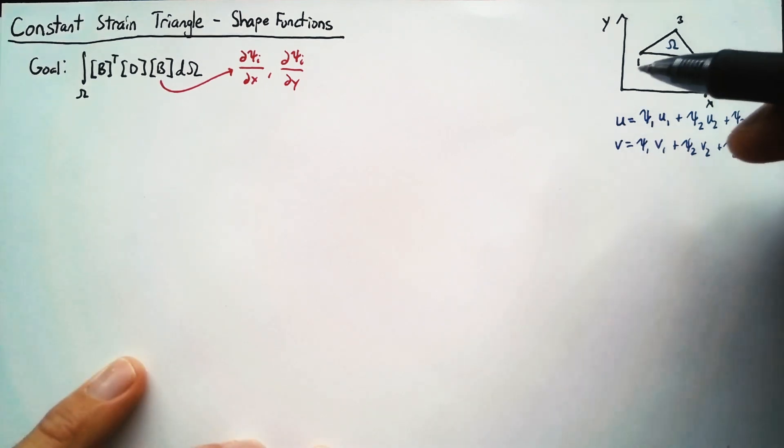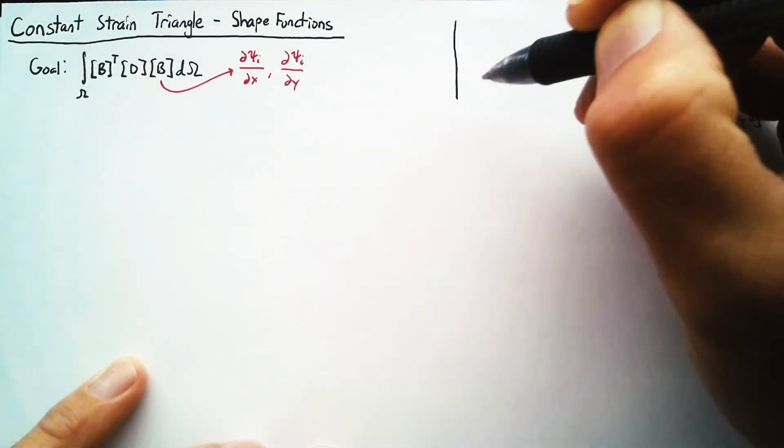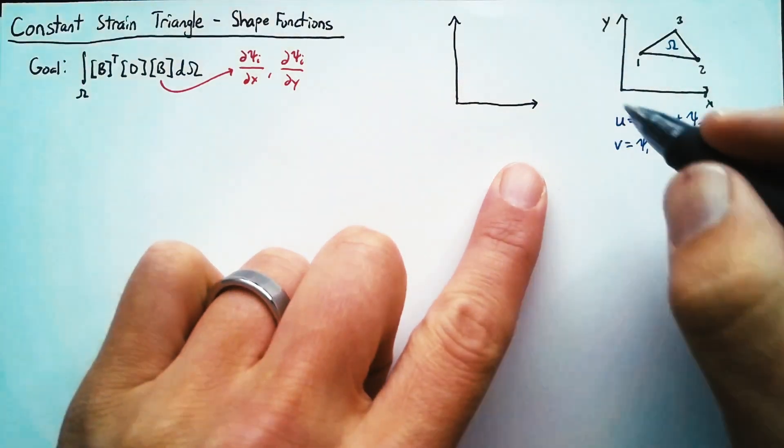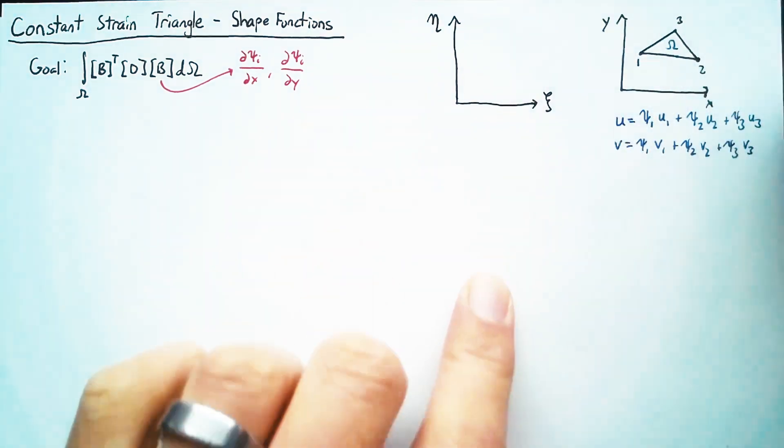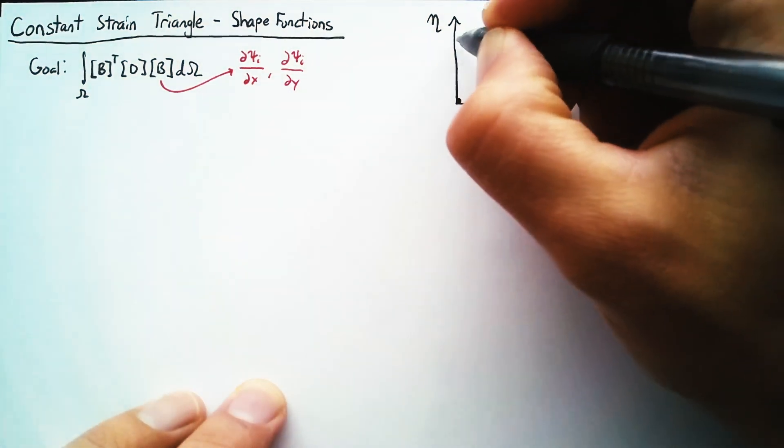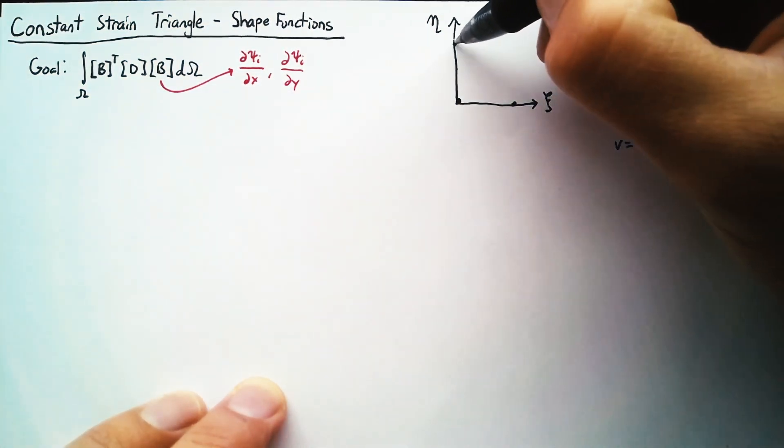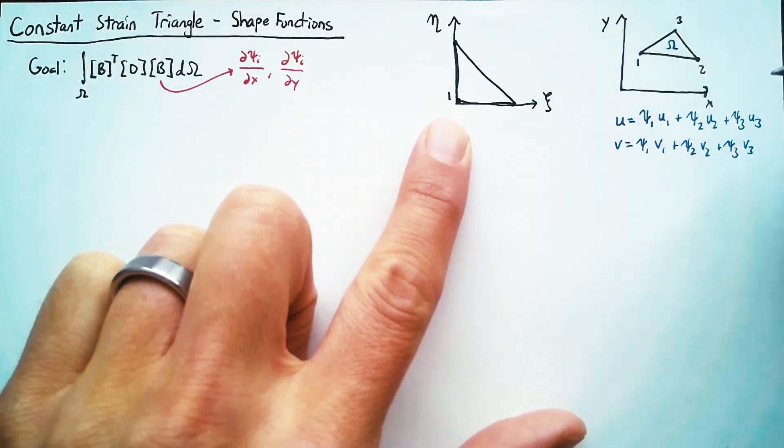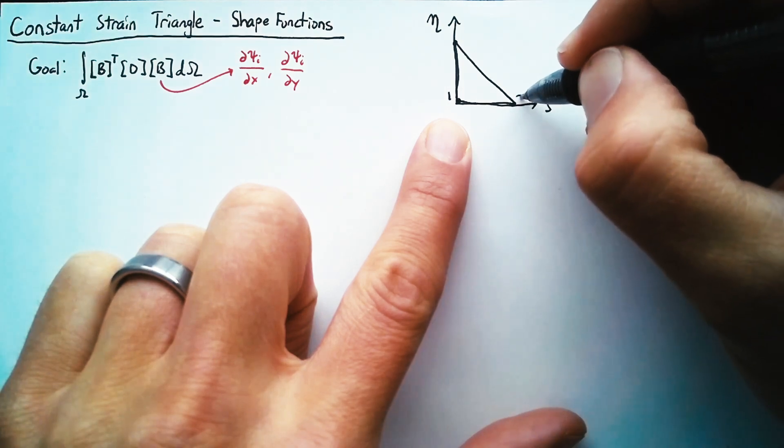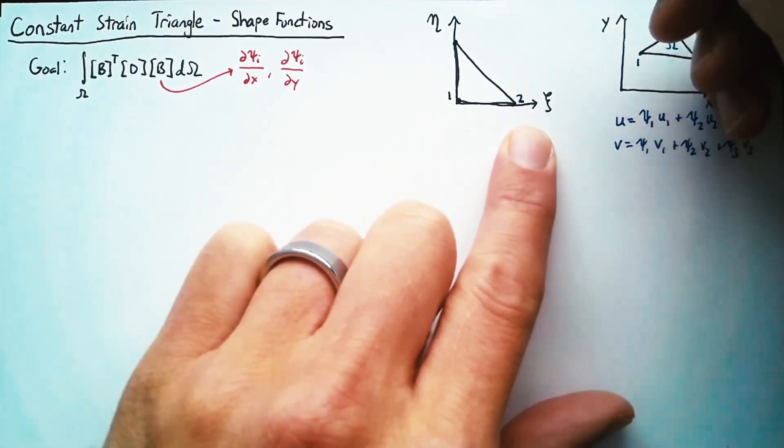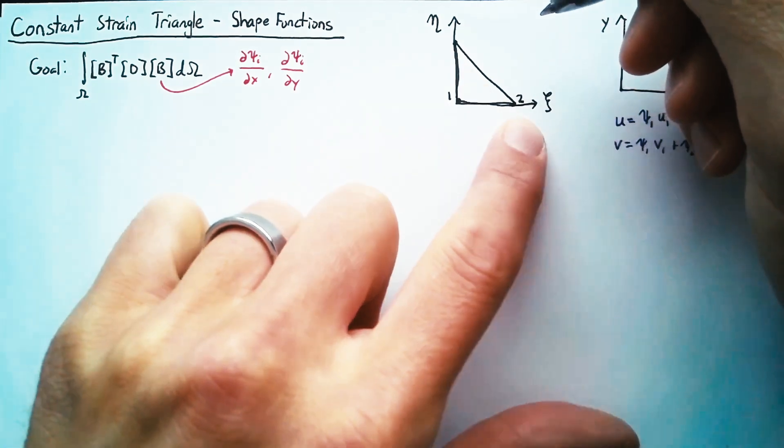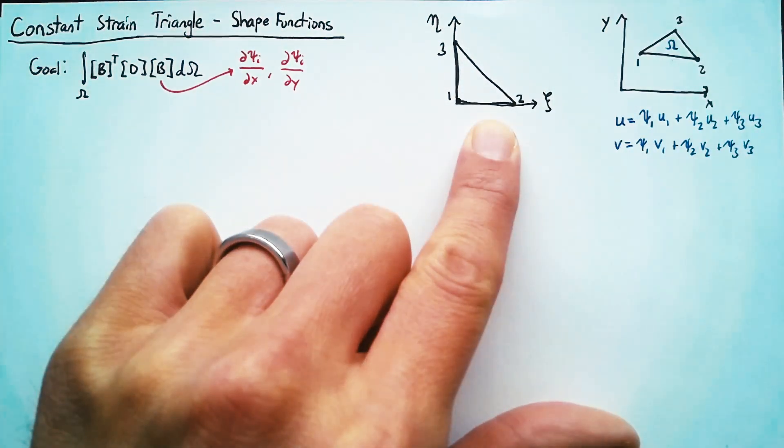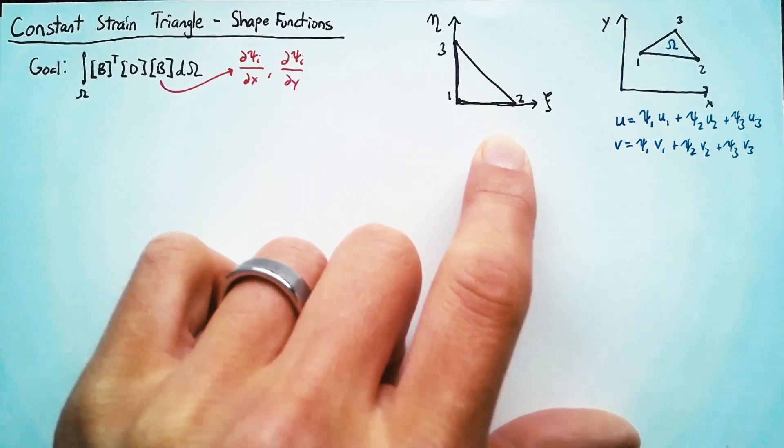So what we're going to do instead is build a simpler triangle in a different coordinate system, which we will call C and eta. This triangle will have nodes at predefined locations. Node 1 is going to be at 0, 0. Node 2 is going to be at C equals 1 and eta equals 0. And then node 3 is going to be at C equals 0 and eta equals 1.